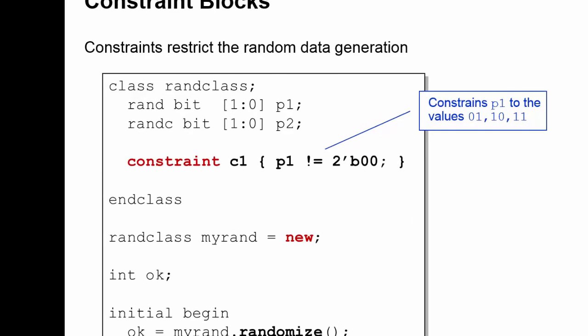We have the keyword constraint followed by the name of the constraint, this is C1, then open curly brackets, and then a list of constraint items, each of which are terminated with a semicolon. I've only got one here, and then I have a close curly brackets which terminates the constraint block. And then I'm not allowed to have a semicolon after the end of the constraint line.